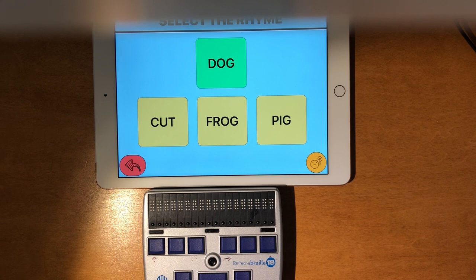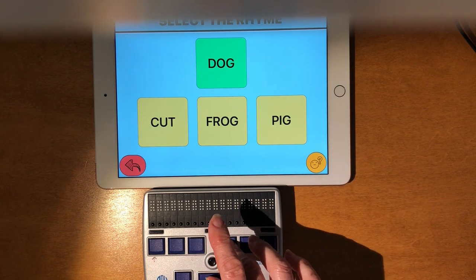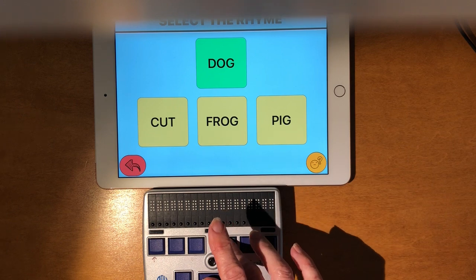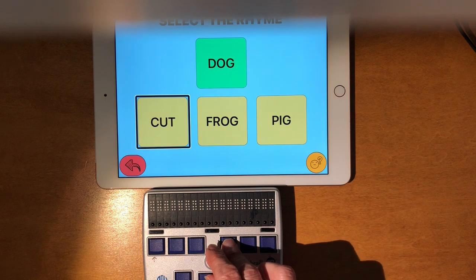So this particular one we're going to go and listen to. I'm going to use a right swipe or four space. Dog. There's my word. Cut. Button.